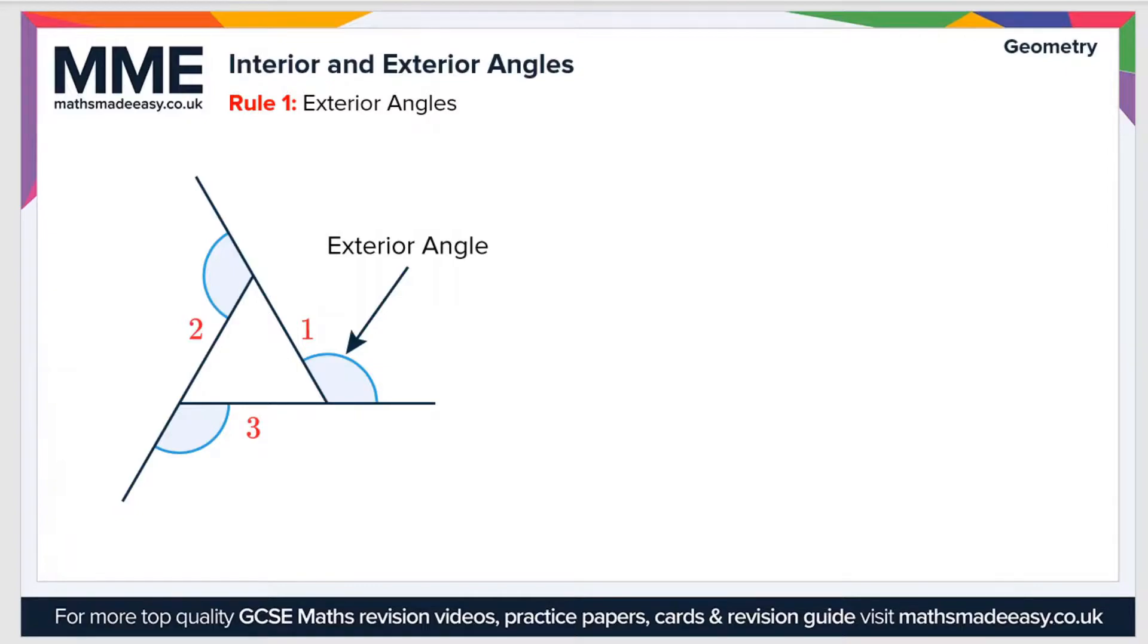But this rule applies specifically to regular polygons. So here we've got an equilateral triangle, which is a regular triangle. Now the rule for the exterior angle of a regular polygon is that the exterior angle equals 360 divided by n.